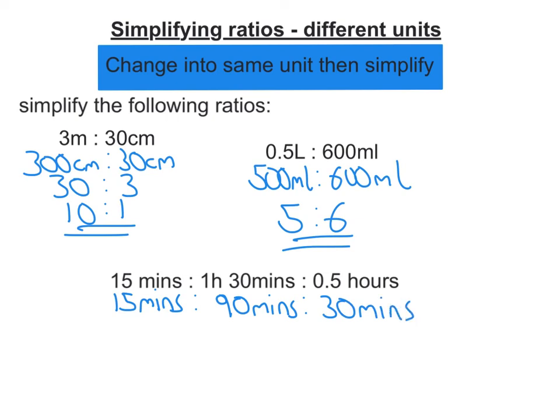15 divides into all of them. 15 divided by 15 is 1. 90 divided by 15 is 6. And 30 divided by 15 is 2. So my ratio is 1 to 6 to 2.